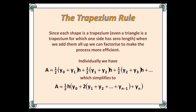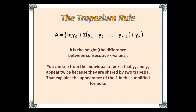Individually, we have all these separate trapezia, which simplify to: A equals half h, then y₀ plus two lots of y₁ plus y₂ plus all the way to the penultimate one, y_(n−1), plus y_n. H is the height — the difference between consecutive x values — and you can see from the individual trapezia that y₁ and y₂ appear twice, because they are shared by two trapezia. That explains the appearance of the two in the simplified formula.